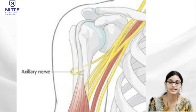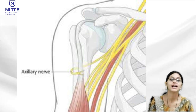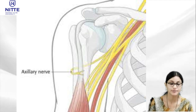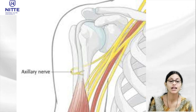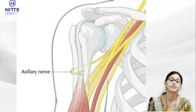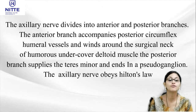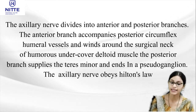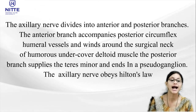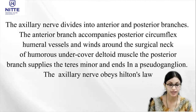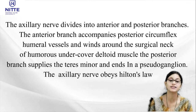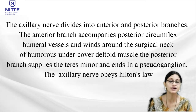The axillary nerve is a branch of the posterior cord conveying fibers from C5 and C6. It is situated behind the third part of axillary artery on the lateral side of the radial nerve. It leaves the posterior wall of the axilla with the posterior circumflex humeral vessels through the quadrangular space. While passing through the quadrangular space it gives an articular branch to the shoulder joint, then divides into anterior and posterior branches. The anterior branch winds around the surgical neck of humerus under cover of deltoid. The posterior branch supplies teres minor and ends in pseudoganglia — obeying Hilton's law.